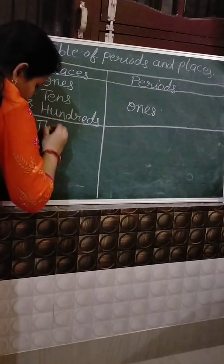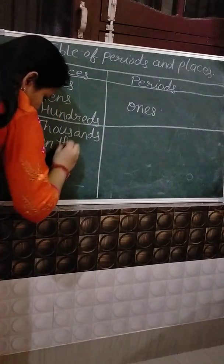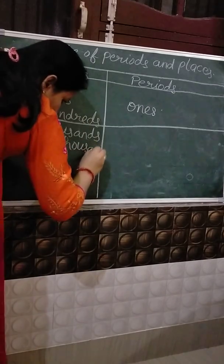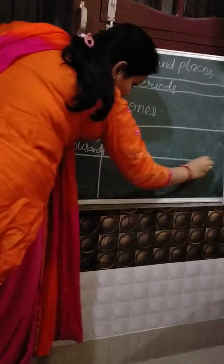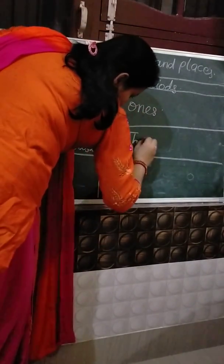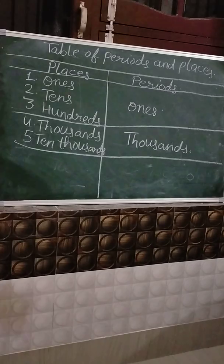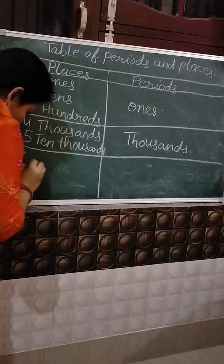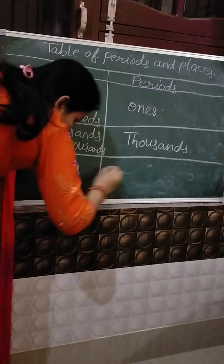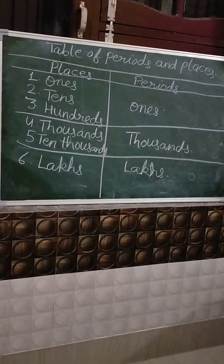The next place is thousands and next is 10,000. Thousands and 10,000 both live in a house named thousands, so the period of thousands and 10,000 is thousands. And next is lakh. Lakh lives in the house called lakhs, so the period of lakh is lakhs.